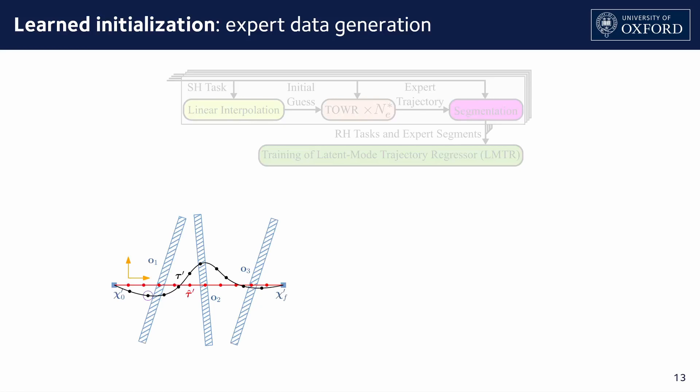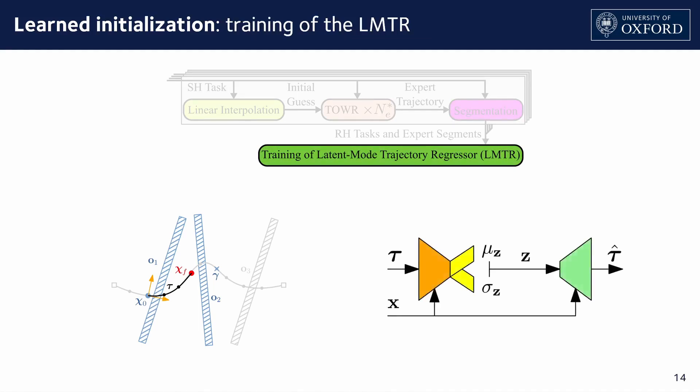Starting at a node, we process these stationary horizon trajectories by establishing the receding horizon task and the corresponding trajectory segment. These are then used to train the LMTR. This is done by training a conditional variational autoencoder, which consists of an encoder network conditioned on the task x, and similarly, a decoder network, which we term the LMTR.